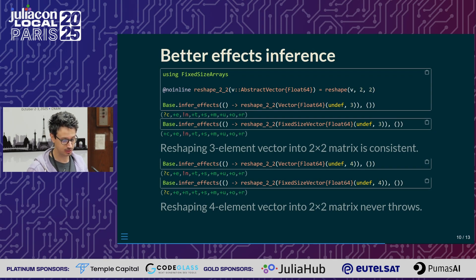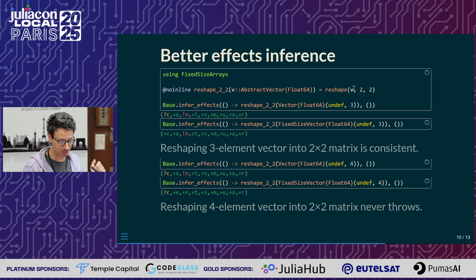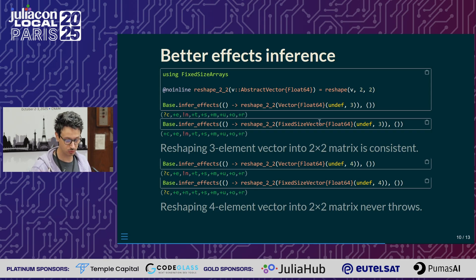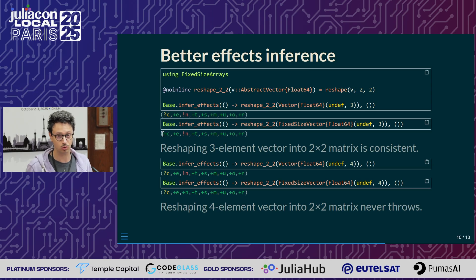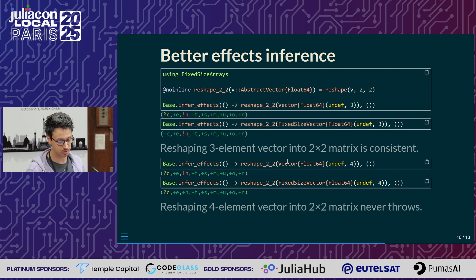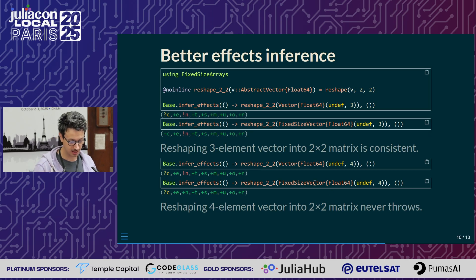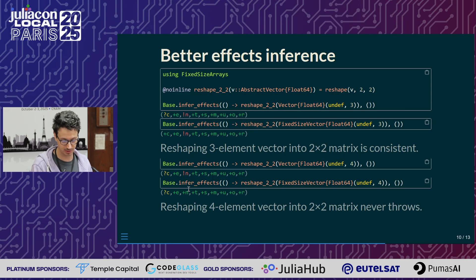You also get better inference of effects. For example, if you have a function reshaping an input vector into a 2x2 matrix and you pass a base.vector of three elements, the compiler cannot know that this operation is consistent because it's always throwing. But if you do this with fixed size arrays, you get inference that it's always throwing. Instead, if you pass a vector of four elements with a base.vector, the compiler cannot know that this function will never throw because the size could in principle change. But if you use a fixed size vector, the compiler can infer that this function will never throw, because reshaping a four-element vector into a 2x2 matrix is always possible.